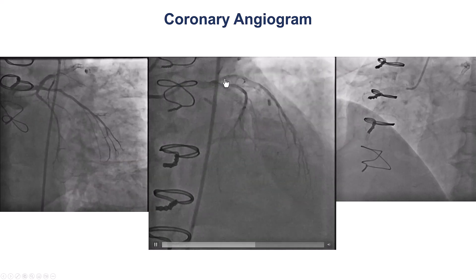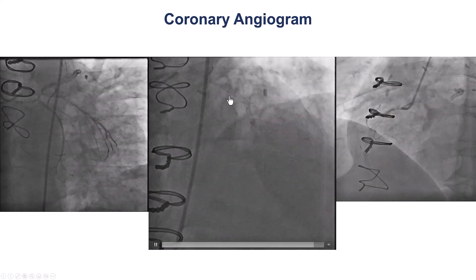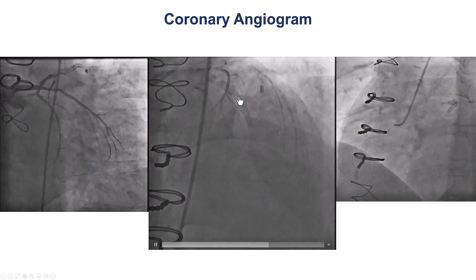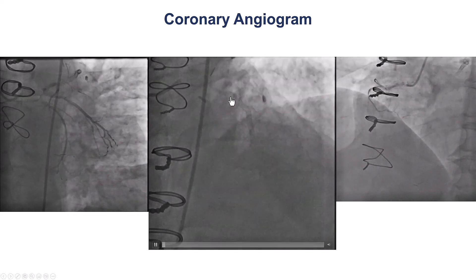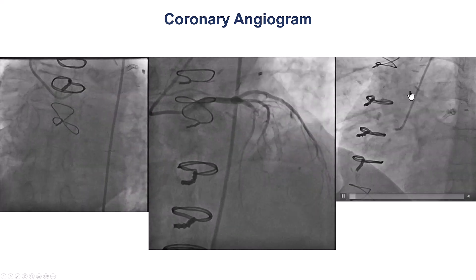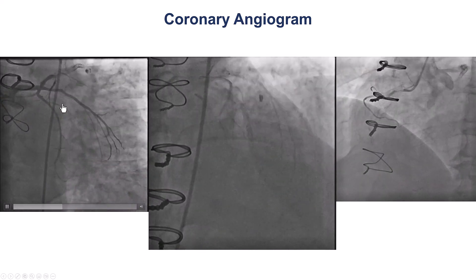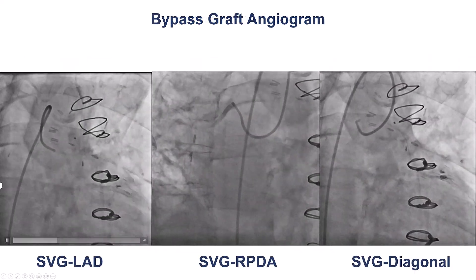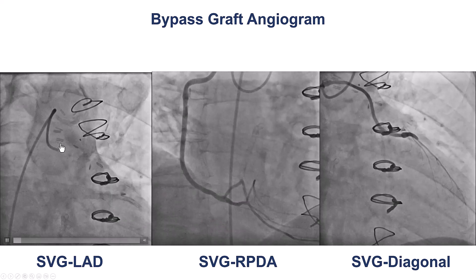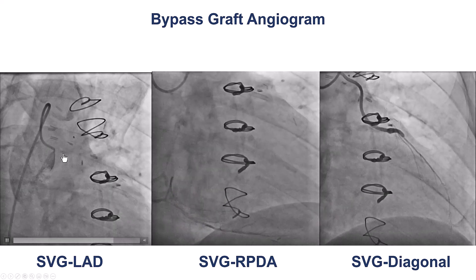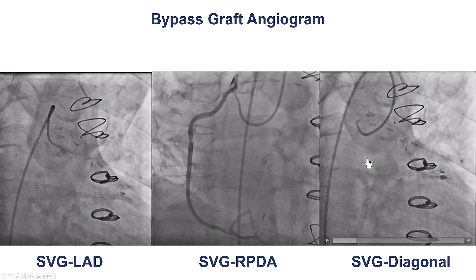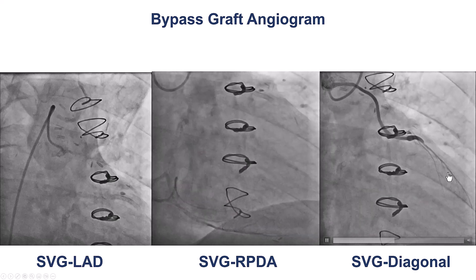This is a diagnostic angiogram. We do see the previous stents — extensive stenting from the proximal to the middle LAD with in-stent occlusion just after the takeoff of a septal branch. The RCA is occluded. The circumflex, ramus, and distal circumflex are patent. The graft to the LAD that was recently done was occluded, but the vein graft to the right coronary artery was open, as was a vein graft to the diagonal branch.